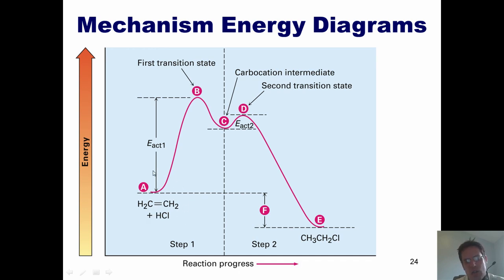Reactants A are drawn here at some level. Products E are drawn at some other level. And then I've got this huge hill that goes up here and then down into this valley. What is the valley? The valley is the carbocation intermediate.